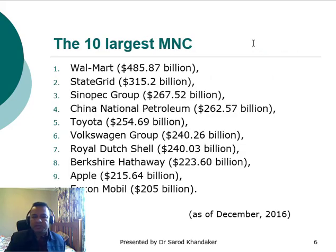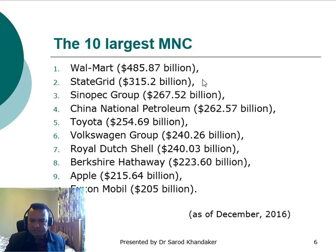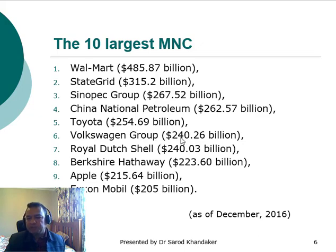In this slide we can see the 10 largest multinational corporations across the globe. Number one is Walmart with total assets of $485 billion. Toyota ranks fifth with assets of $254 billion. Volkswagen Group has $240 billion, Apple $255 billion, and ExxonMobil $205 billion.